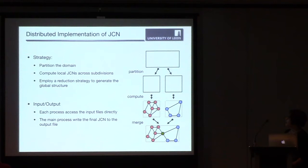So as reported last year, our general strategy is to partition the domain, computing the local JCNs across the subdivision, and then employ a reduction strategy to generate a global structure. For input and output, because our input data sets are provided as a set of input files, the parent process gives the file name and indexes into the file that each child requires to read data from. And then each child process directly accesses the input files. The result is written to the output file by the main process.